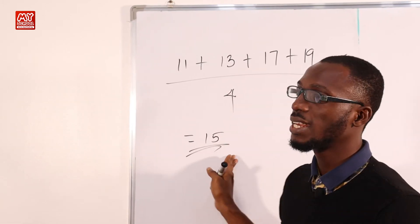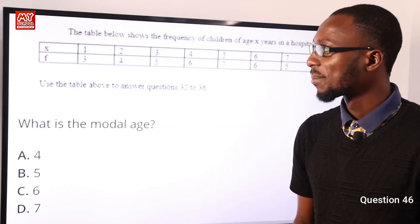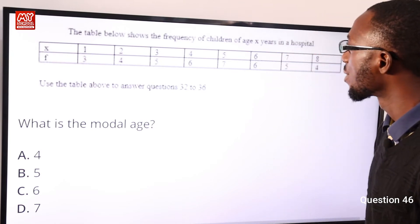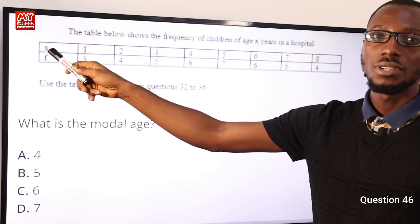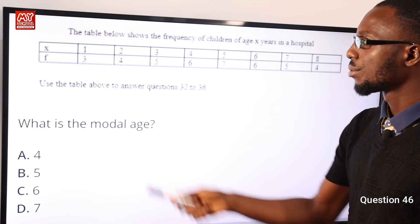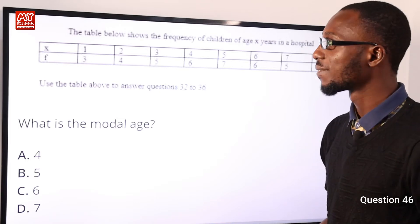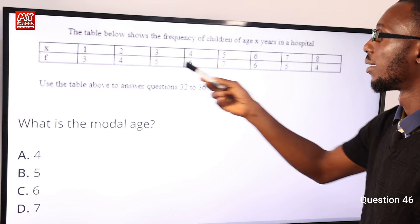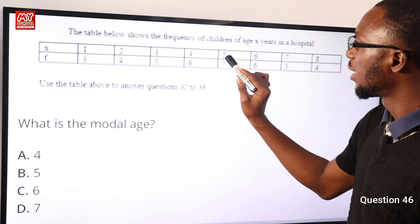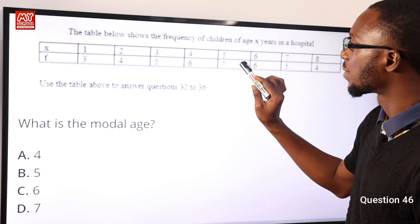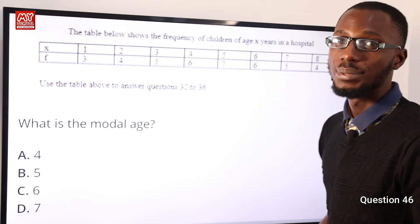The average of the first 4 prime numbers greater than 10 is 15, so option D is correct. Question 46: The table shows the frequency of children of age x in a hospital. The question asks for the modal age — the age with the highest frequency. Age 5 has the highest frequency of 7, so the modal age is 5 years. Option B is correct.